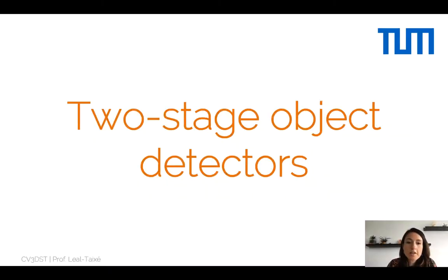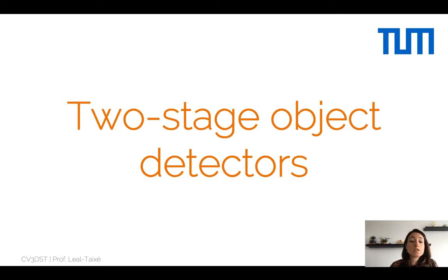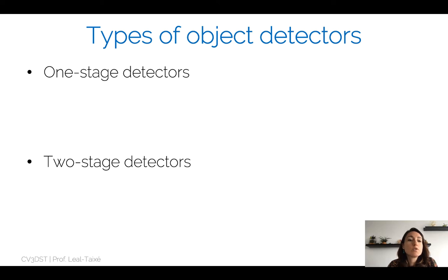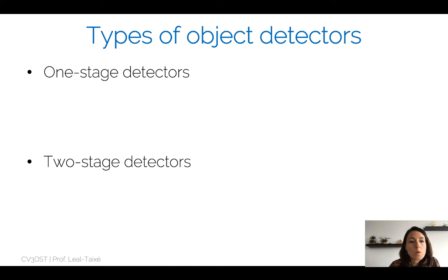Welcome to this new lecture of Detection, Segmentation and Tracking. Today we will cover two-stage object detectors. We already saw in the last lecture that we will talk about two deep learning-based types of object detectors: the one-stage detectors and the two-stage detectors.